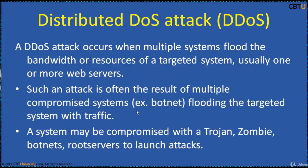A DDoS attack occurs when multiple systems flood the bandwidth or resources of a targeted system, usually one or more web servers. Such an attack is often the result of multiple compromised systems flooding the target with traffic. A system may be compromised with a Trojan, zombie, botnets, or root servers to launch attacks.